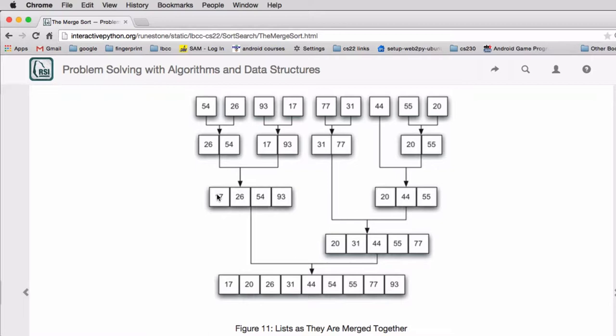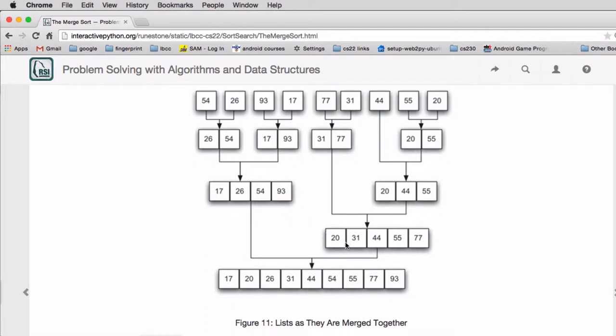So it figures out which one's smaller. It moves that in. And then it advances the pointer in this list. And then it sees which is the smaller of those two numbers and keeps moving in the smaller of the next number as it goes through the two lists.